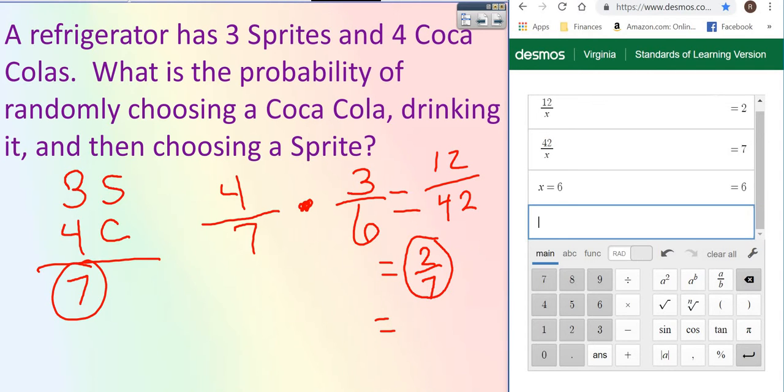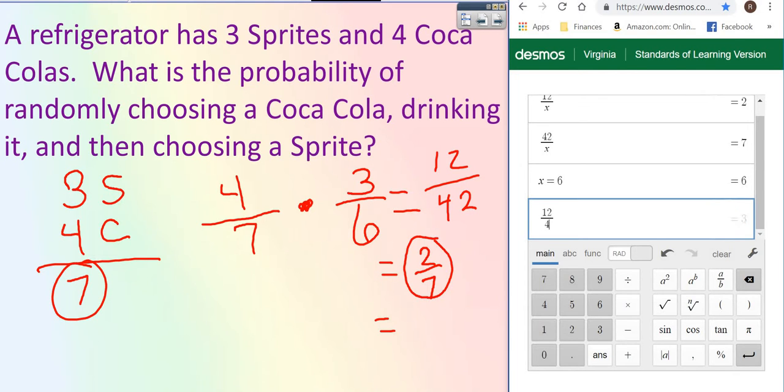Now I'm going to go ahead and put in my original answer so I know that my decimal is correct. 12 divided by 42. Then I'm going to try my simplified answer. Again, we're just double checking. Okay, all of those decimals are exactly the same.